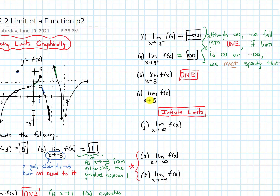Part I: the limit as x approaches 5 of my function. This is an overall, two-sided limit. From both sides, the function is dropping to negative infinity. So this equals negative infinity — technically in the does-not-exist category, but because it is approaching negative infinity, I need to be specific about that.